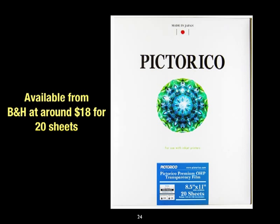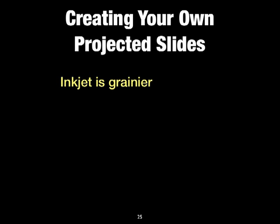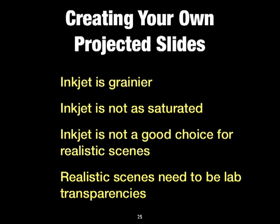This film package — it's available from B&H at around $18 for 20 sheets. You can probably get 20 to 30 slides out of a sheet depending on your layout. Now remember this: the inkjet is grainier. The inkjet is not as saturated in color. The inkjet is not the best choice for realistic scenes — realistic scenes need to be lab transparencies.